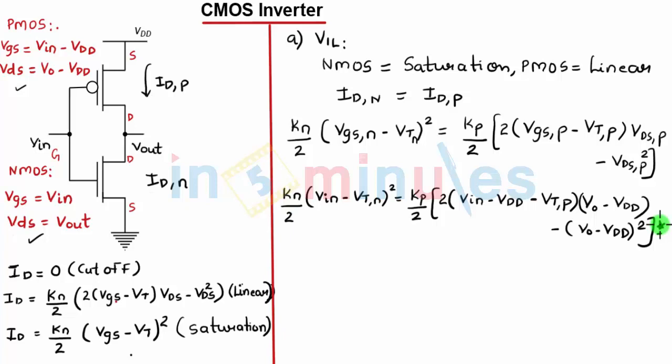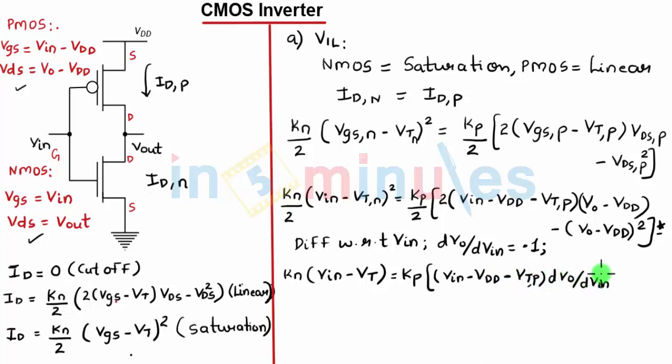Let's quickly do that and write the corresponding equation. We will differentiate with respect to VIN and we know that DVout by DVIN is equal to minus 1. Let's do the differentiation: KN, VIN minus VT, equal to KP, VIN minus VDD minus VTP for PMOS, DVout by DVIN. This is the first part plus Vout minus VT, the second term, minus Vout minus VDD into DVout by DVIN, the third term.